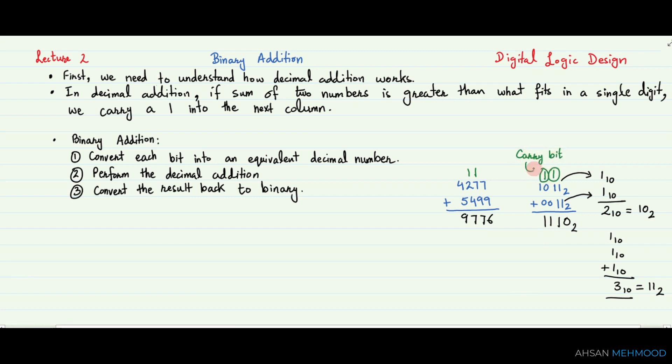The bit that is carried over to the neighboring column is called the carry bit. Now we will go through Example 1, in which we will compute the sum of 0111 base 2 and 0101 base 2.